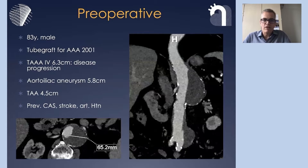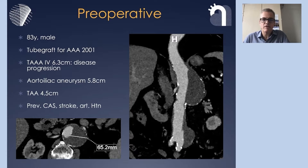This case is about an 83-year-old male patient who had a tube graft repair 20 years ago and has developed proximal and distal progression of disease. He has some significant comorbidities.